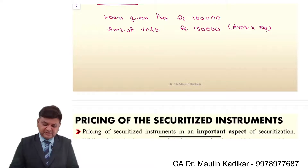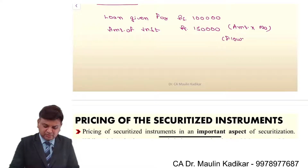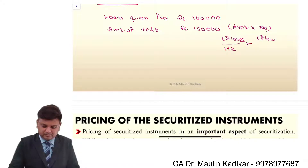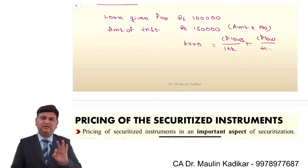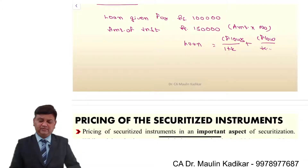So basically we understand that the future cash flows are discounted in present value terms, and that is the way the loan amount is determined. This is simply the time value of money concept that we have.